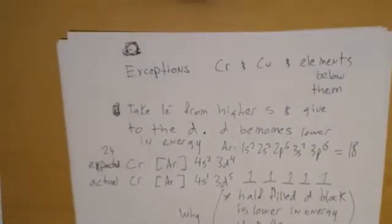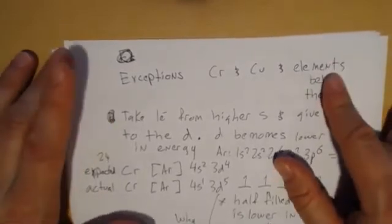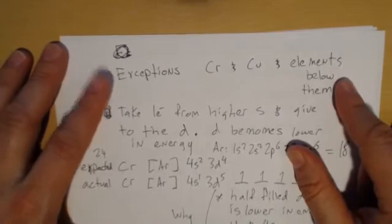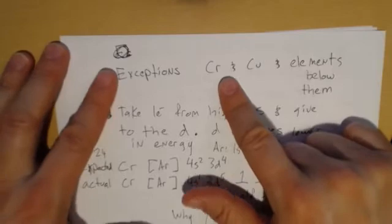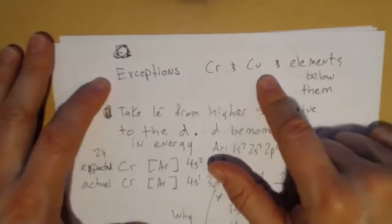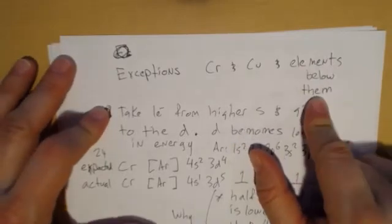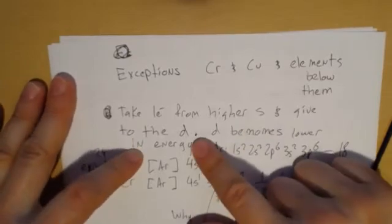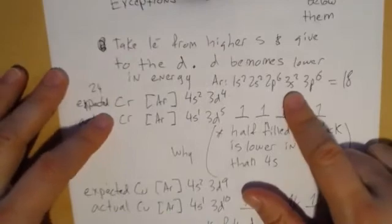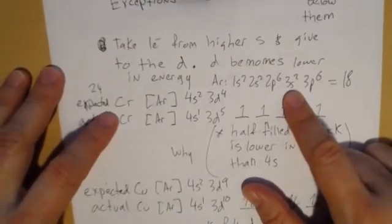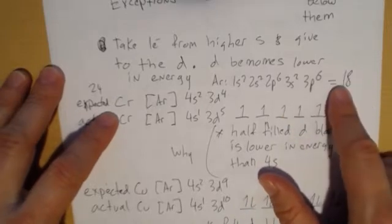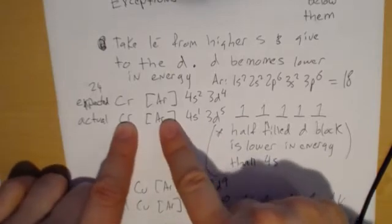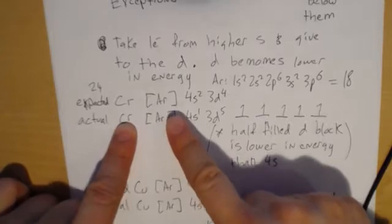We saw that there were some exceptions. There's actually more exceptions than these, but these are the first exceptions we see on the periodic table. We're going to ignore exceptions in the F block; there's tons of exceptions in the F block actually. But these ones we can actually explain pretty easily from a quantum mechanical perspective. Chromium and copper, and the elements directly below them in their group—they take one electron from the higher S and give it to the D; the D becomes lower in energy. Elements that are starting to fill the D block in the 3d have a full shell up to argon. The expected for chromium was argon 4s2 3d4, but the actual, when they do the actual quantum mechanical calculations, what's actually lower in energy is argon 4s1 3d5.